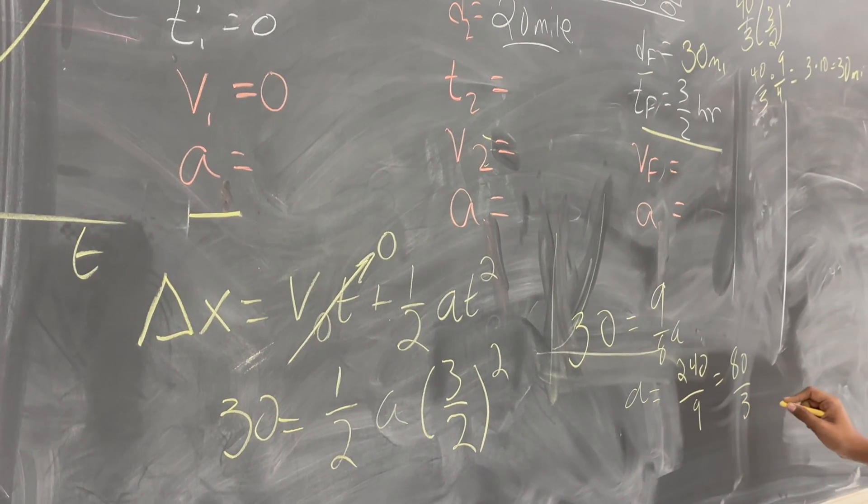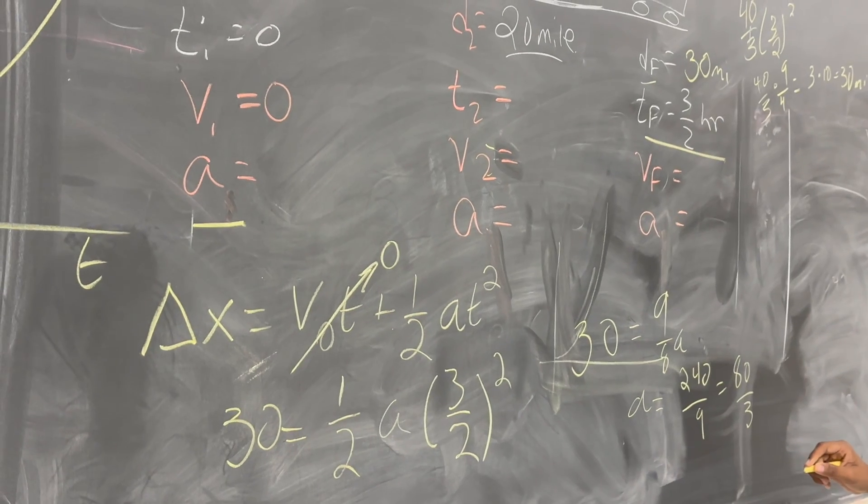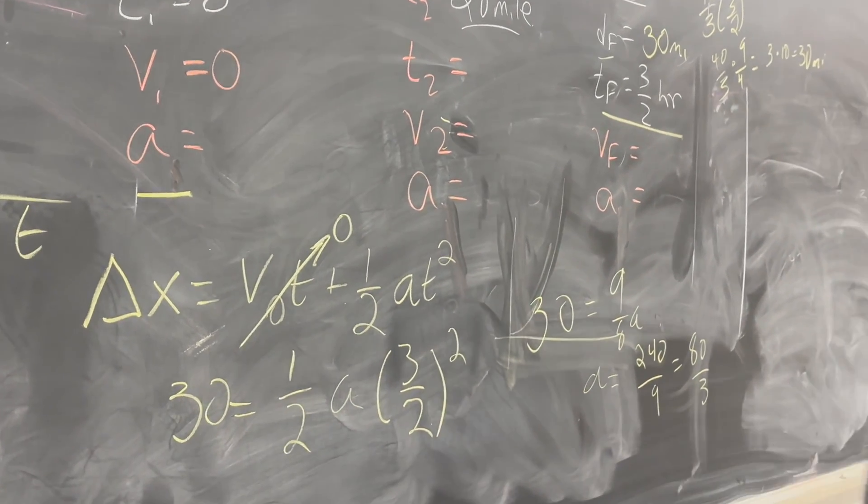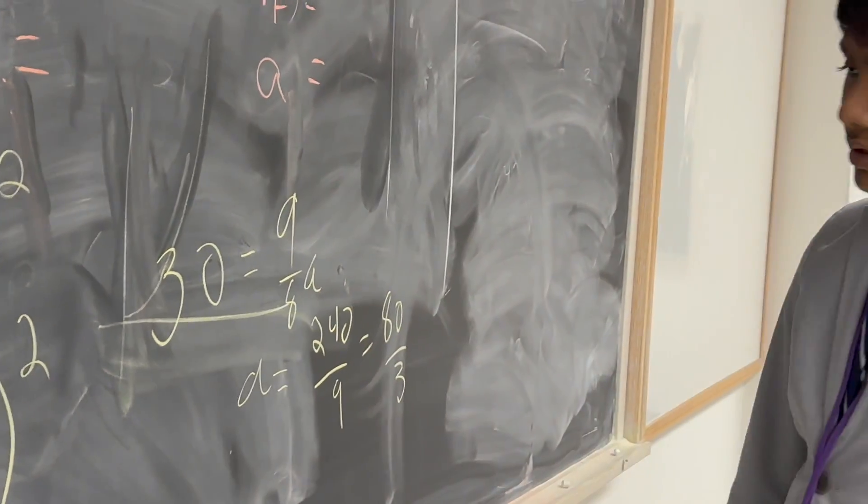So, 1 half. What? 30 is equal to 9 over 4. Yeah. 1 half, 9 over 4. Okay. And that gives us 9 over 8.